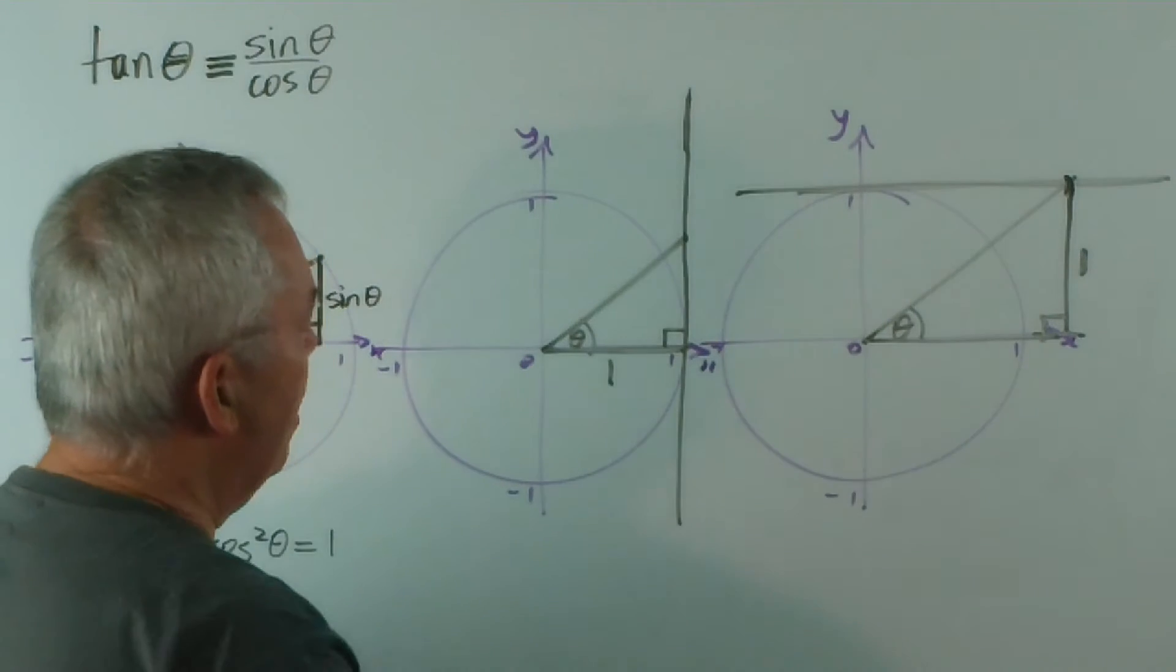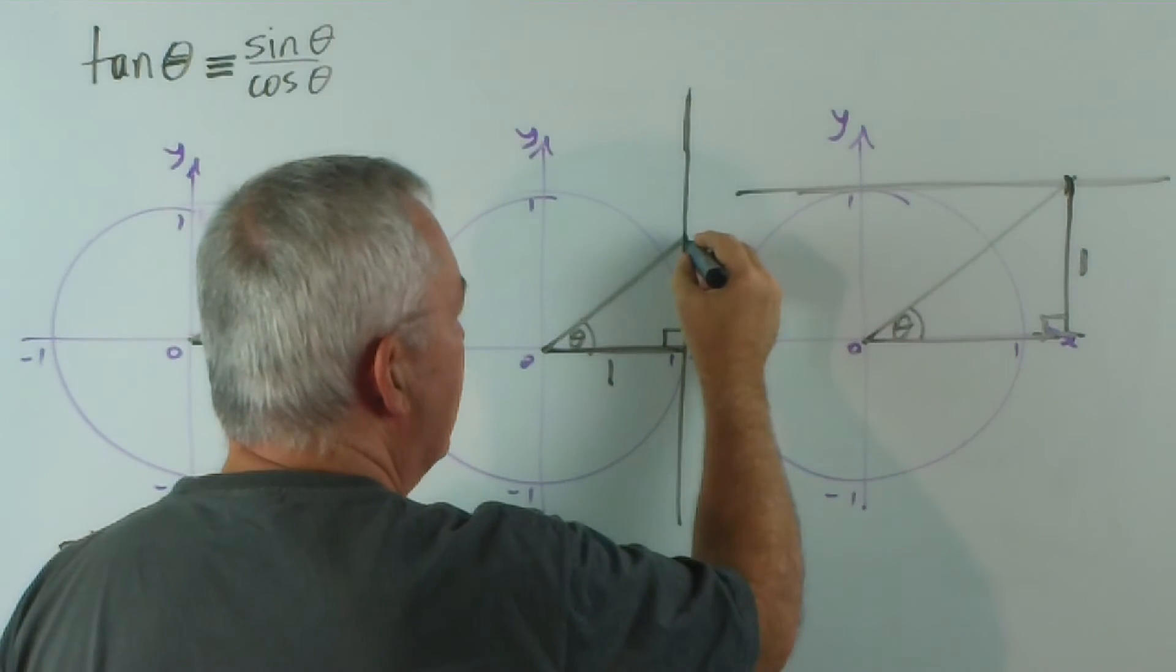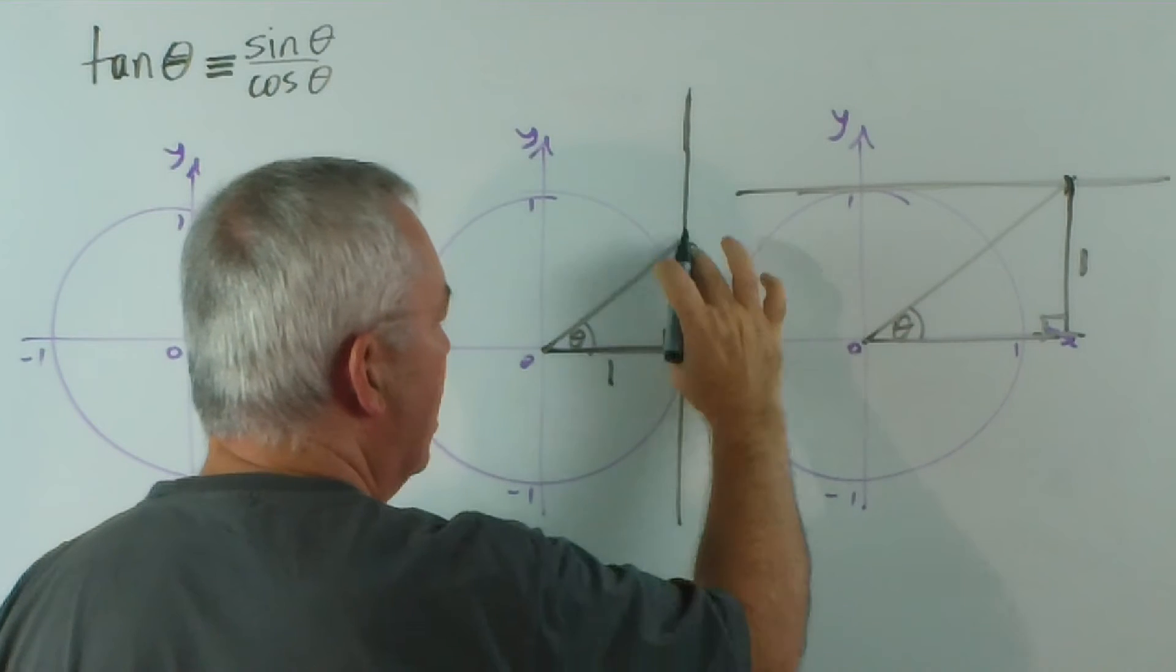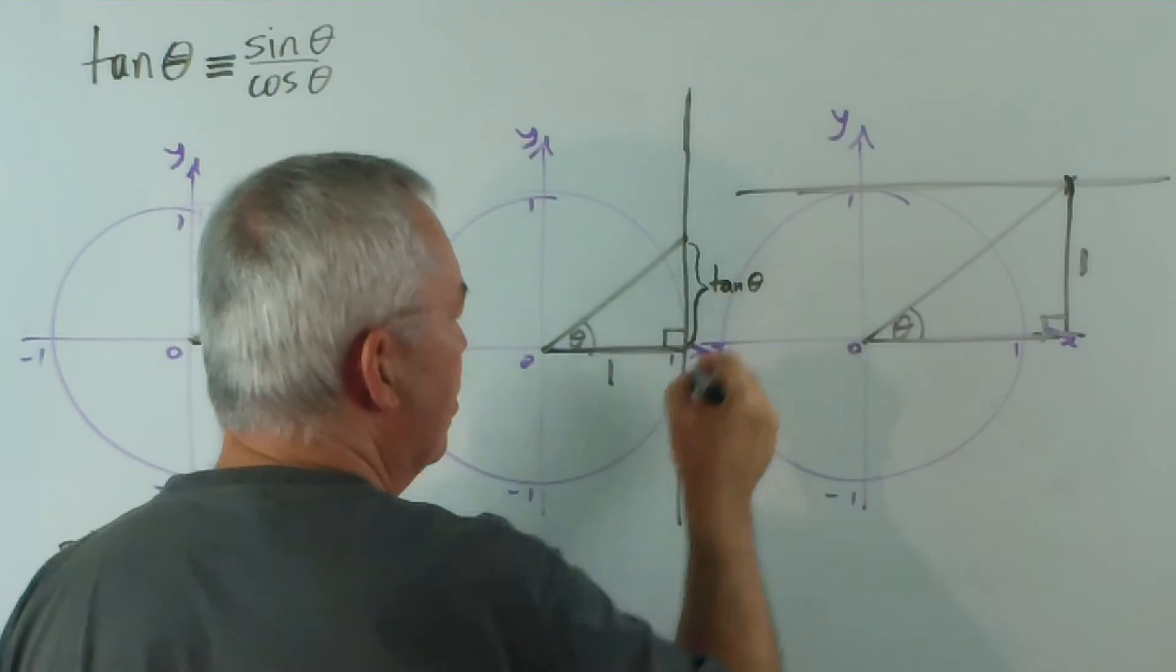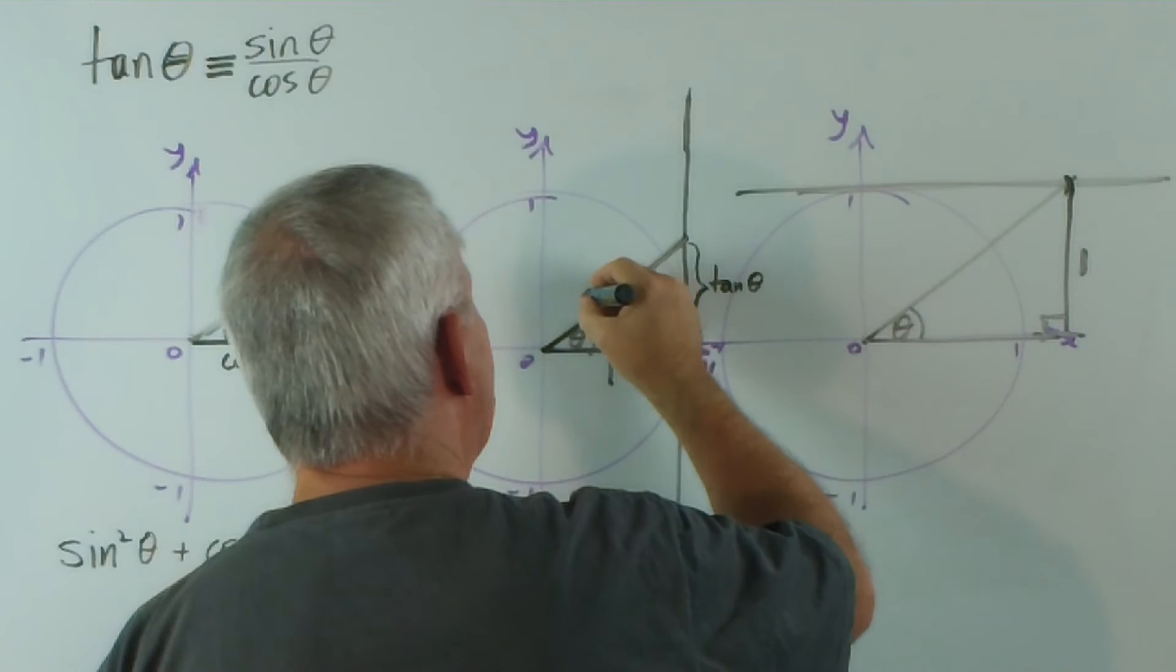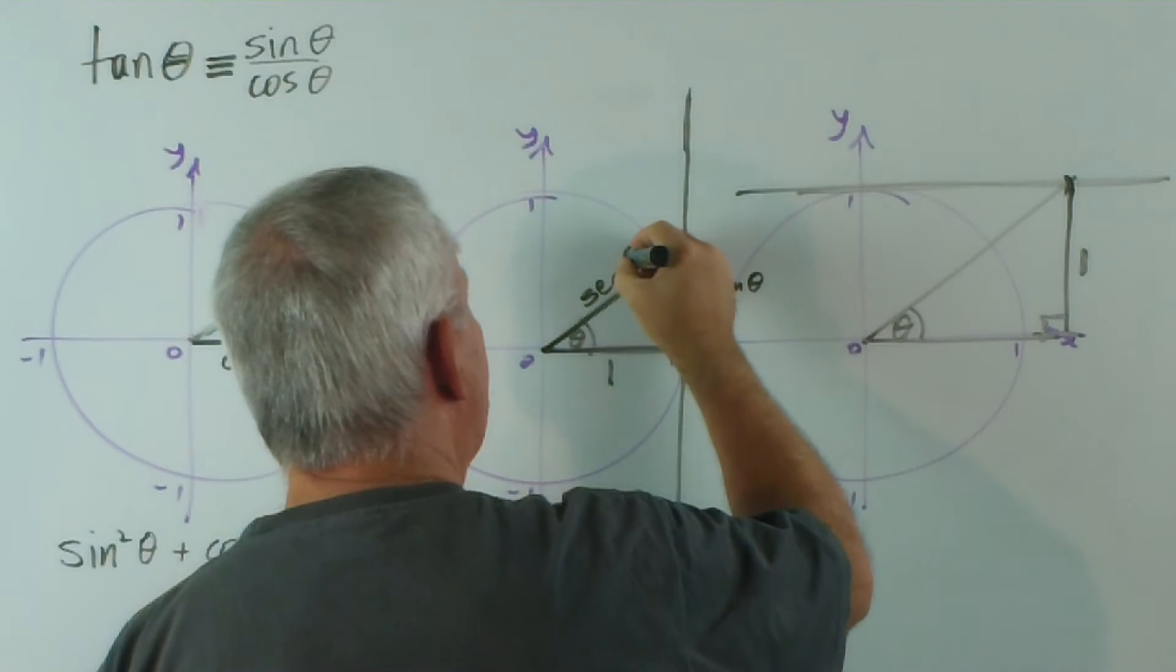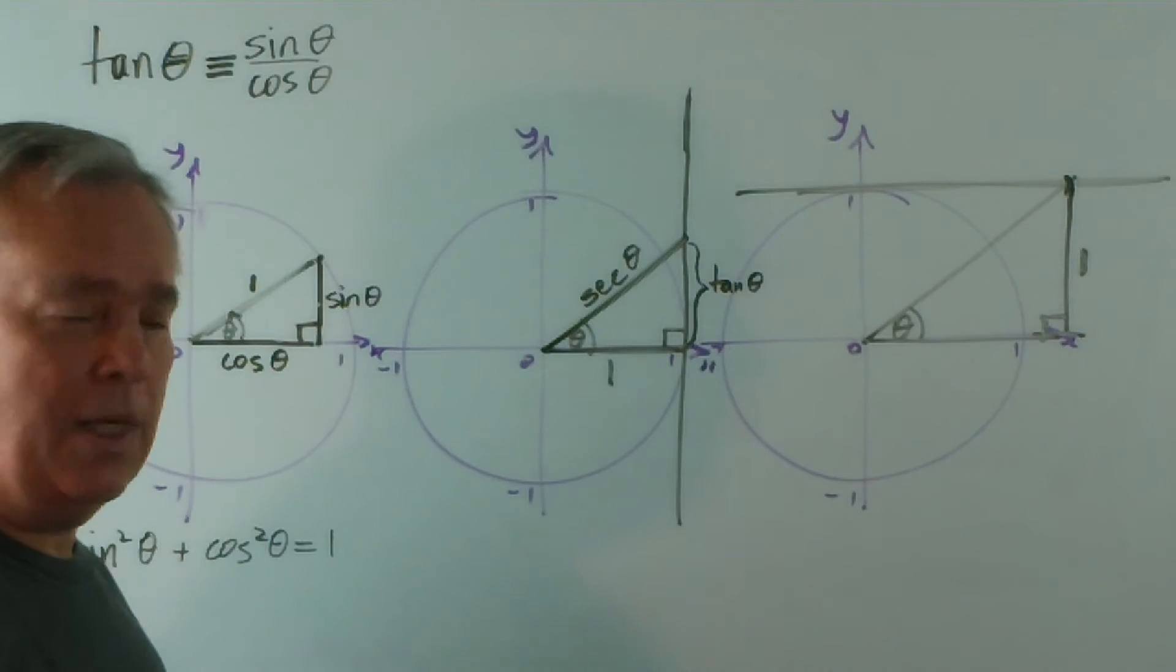In this one here, it transpires that if this is one, the distance on the tangent, the length up the tangent, is tan theta. Well, that sort of makes sense, doesn't it? And this length here is the secant of theta, sec theta. I explained that about two videos ago.